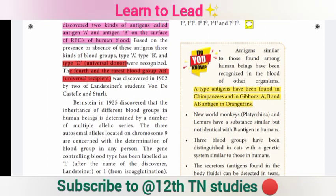Universal donor and universal recipient are important terms. The universal donor is one blood group, and the universal recipient is AB blood group. AB blood group is the fourth and rarest blood group.